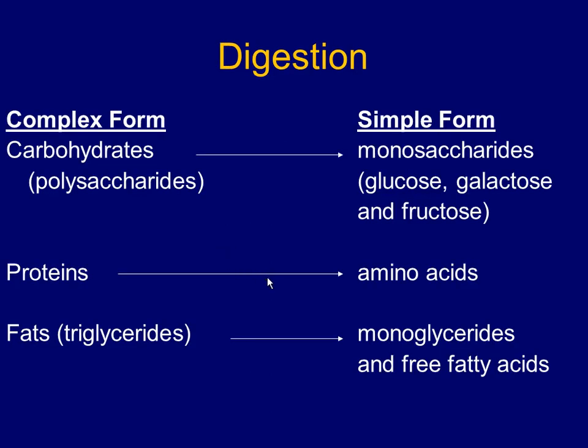Chemical digestion breaks things down into their simplest components. When you eat a Big Mac, you have carbs, proteins, and fats, but you can't absorb any of them in their original form. A carbohydrate is a long string of sugars — you have to clip it into tiny segments to absorb it. Some carbohydrates like insoluble fibers and cellulose can't be broken apart — no animal on the planet can do that. They go through and scrape your GI tract, acting like a cleaner.